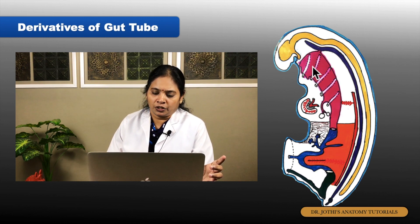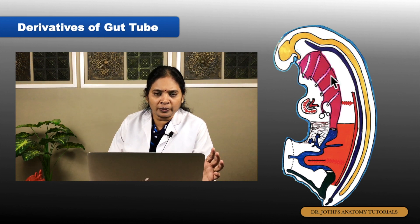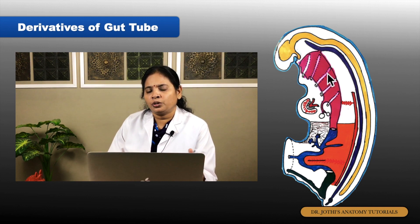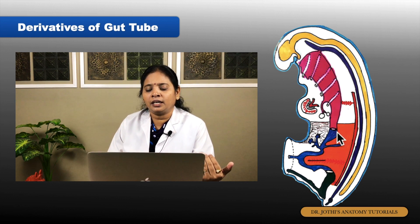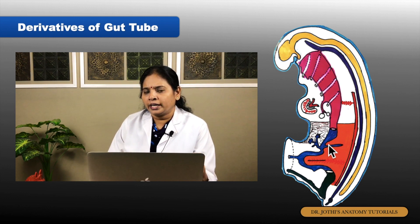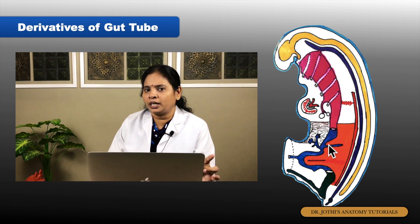These are the important intestinal tubular structures. The endoderm, along with the yolk sac tube, forms the inner covering — that is the mucosa. So the gut wall layers from inner to outer are: mucosa, submucosa, muscularis mucosa. The mesodermal layer forms the muscle, blood vessels. The outer coating is either adventitia or serosa. The serosa forms the mesentery — that is the peritoneal covering which forms the mesentery.